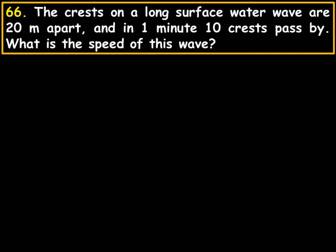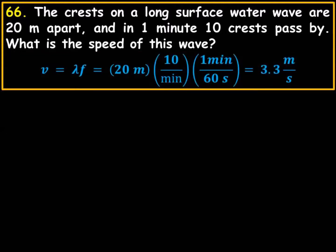Again, we know that speed is wavelength times frequency. Remember, frequency has to be per second, so it's very simple. We know that it's going to be 10 cycles per minute. It's going to convert minutes to seconds. You multiply by one minute over 60 seconds, and that will automatically convert it to hertz.